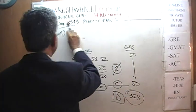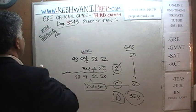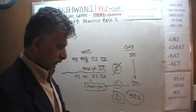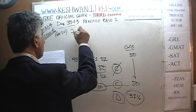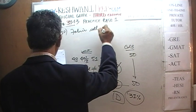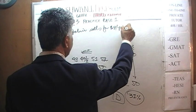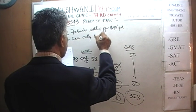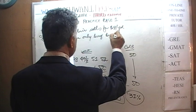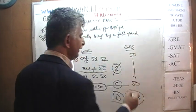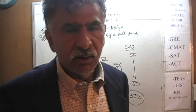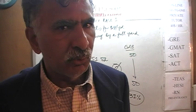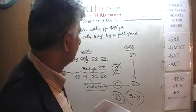Let's do number 10 on the next page — page 364. This is no longer a quantitative comparison question; we are back to the ordinary multiple-choice question. In number 10, we are told that we have a fabric that sells for $8 per yard. We can only buy a full yard — if you want three quarters of a yard or nine tenths of a yard, they won't sell it to you. You must buy 1 yard, 2 yards, 20 yards, but not 22 and a quarter yards.